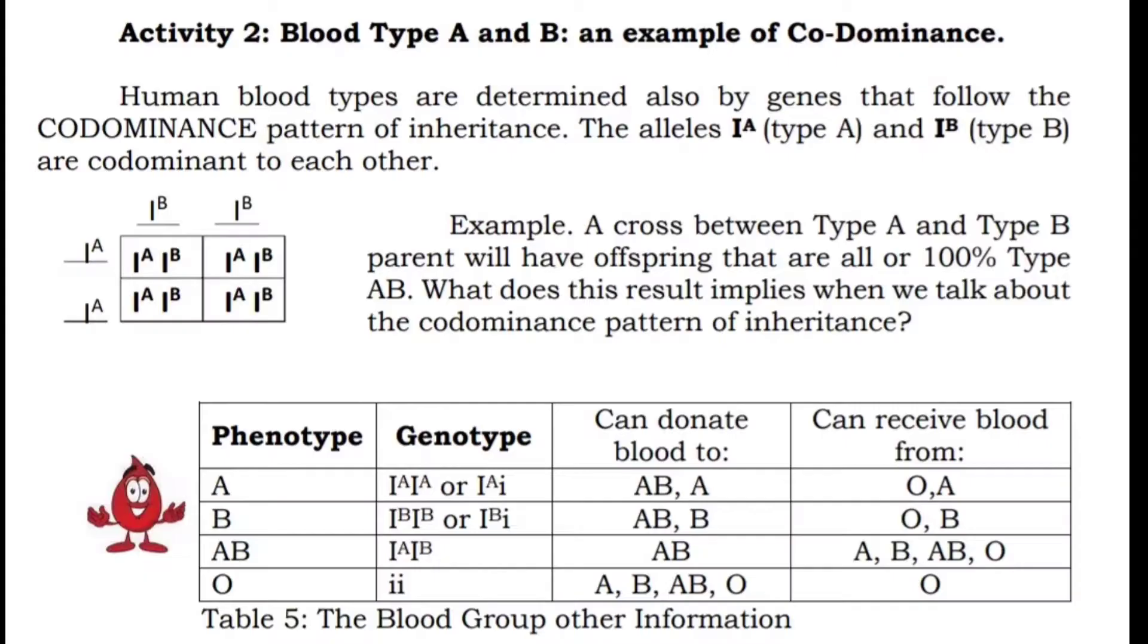Okay, for our activity number 2, blood type A and B as an example of co-dominance.